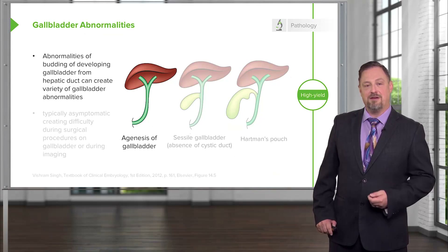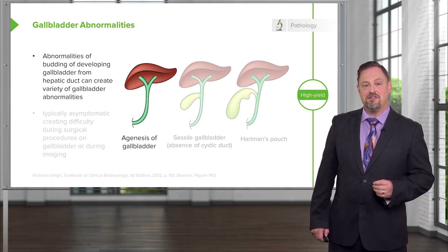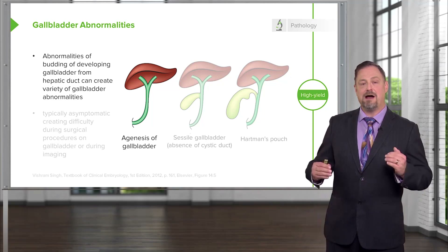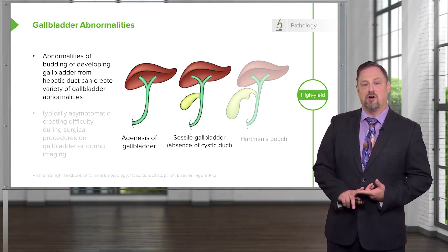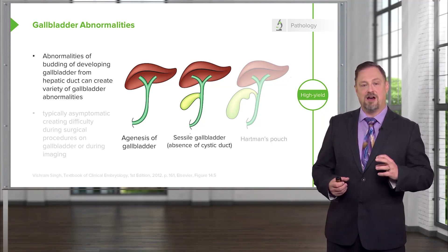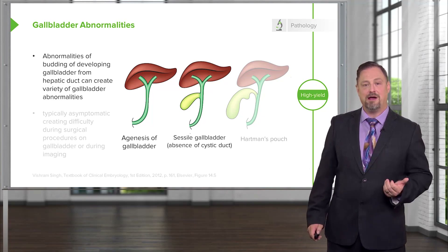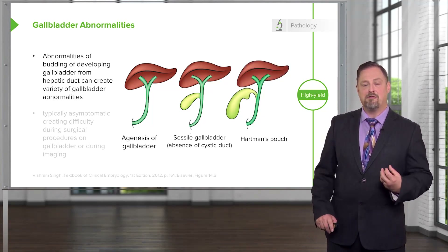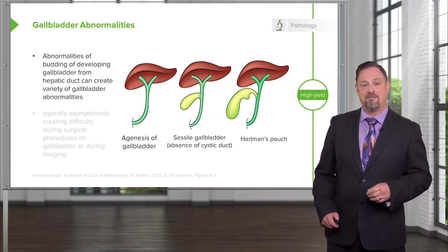Problems with the gallbladder and its drainage can be very serious. Failure of the gallbladder to form is gallbladder agenesis, which is not as severe as one might think since bile from the liver can still drain to the small intestine. A sessile gallbladder occurs when it develops directly off the common bile duct with no cystic duct. A Hartmann's pouch is an additional pouch developing off of the gallbladder — not problematic in itself, but relevant during surgery due to unusual drainage patterns.